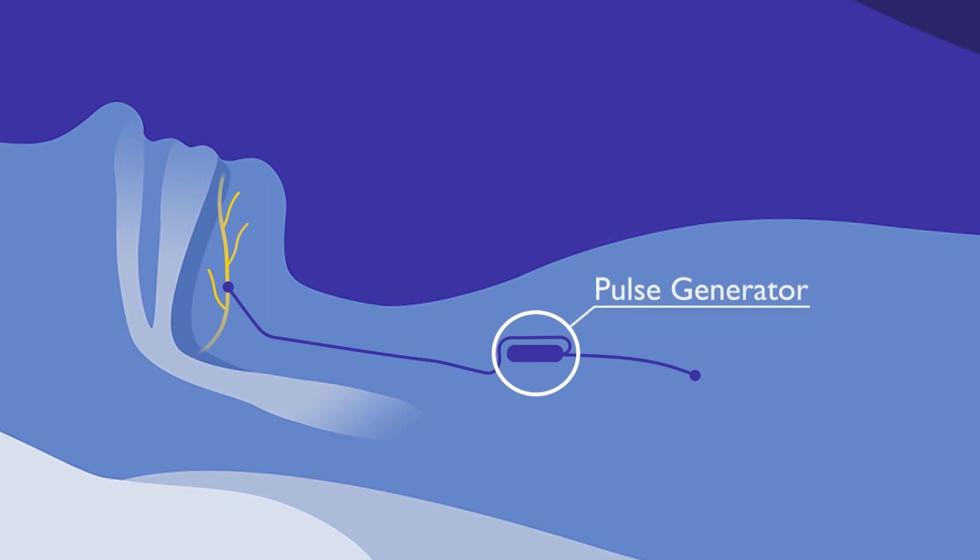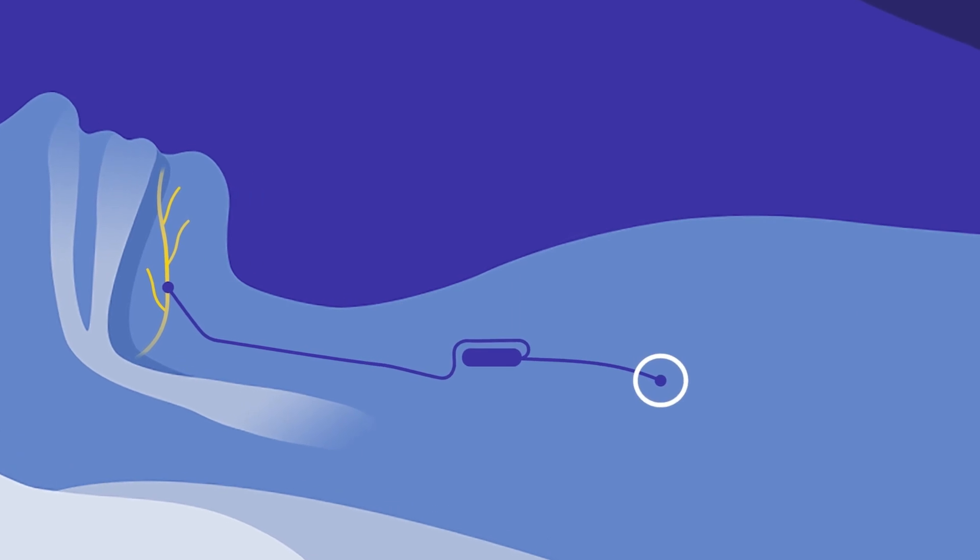This cuff electrode connects under the skin to an implantable pulse generator that's housed under the skin in the chest, which is then connected to a respiratory sensing device that goes between the ribs.